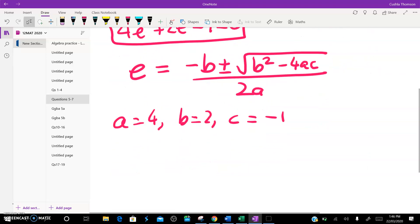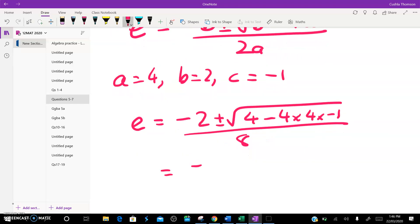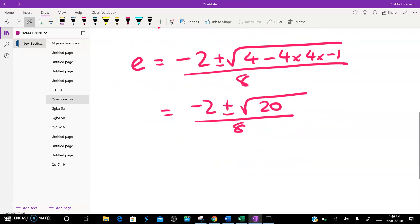So substituting those in, what do we get? Well, we get e is equal to negative 2 plus or minus the square root of 4 minus 4 times 4 times negative 1 divided by 8. Cleaning that up, I get negative 2 plus or minus the square root of 20 divided by 8. And I can chuck that into my calculator. e will equal 0.309, or e equals negative 0.809.